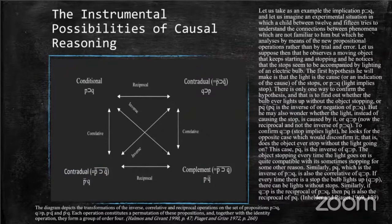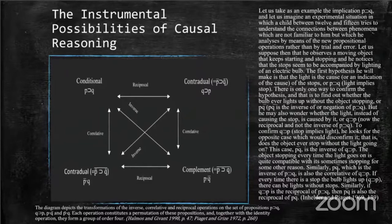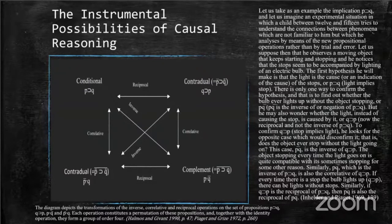Piaget shows that the identity, negation (inverse), correlative, and reciprocal-inverse-correlative operations together form a group called the INCR group. There are six INCR groups altogether in the interpropositional grouping — six substructures within the operational structure. These groups are completely reversible structures and play a regulative role in reasoning. There are notable similarities between the INCR group and the three laws of thought: the law of identity reflects the identity operation, while the laws of non-contradiction and excluded middle reflect the complementarity of propositions — exhaustive yet non-overlapping.